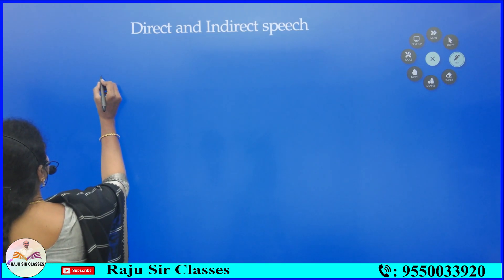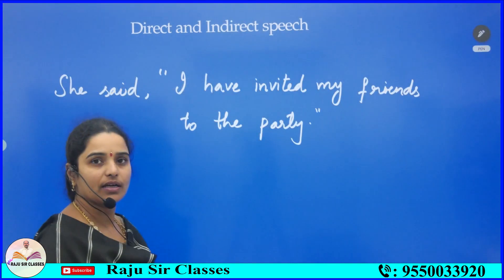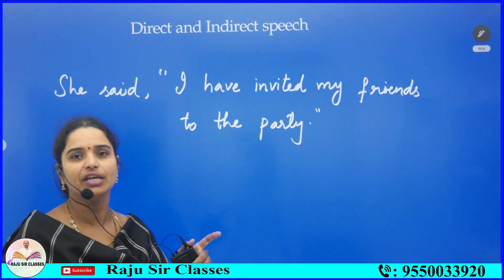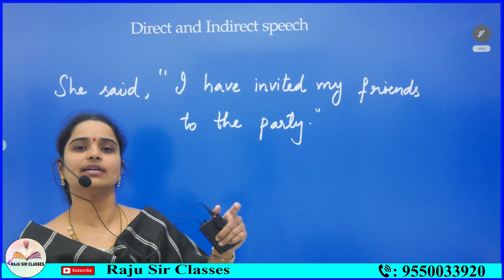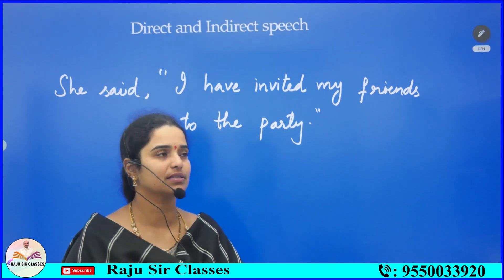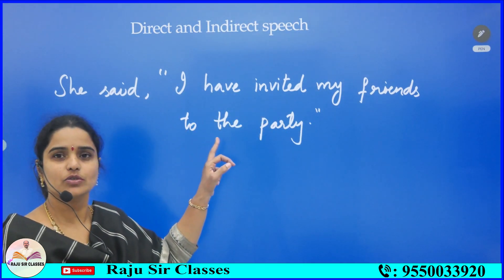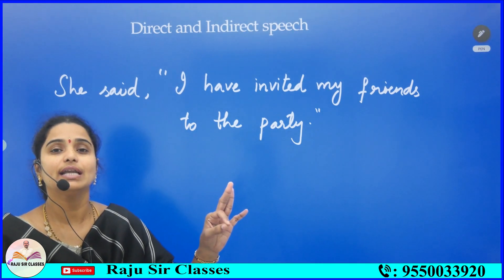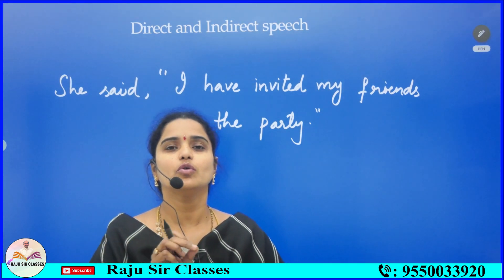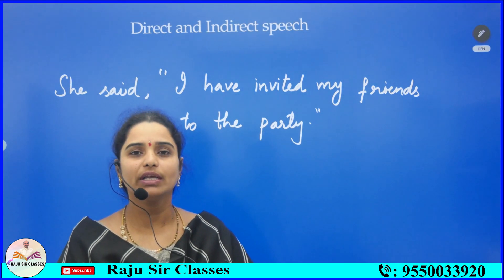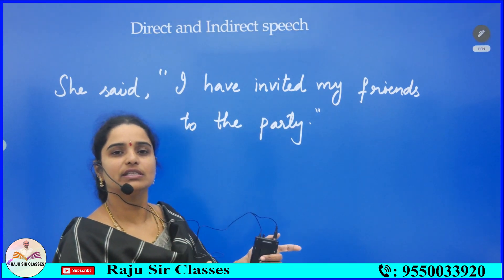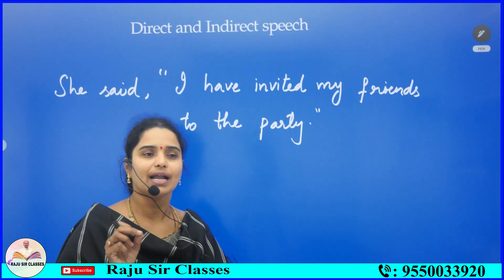Now let us look at a sentence: 'She said, I have invited my friends to the party.' First, try to identify whether this is direct or indirect speech. You can see punctuation — inverted commas — which we use in direct speech. In indirect speech, we don't use any sort of punctuation; only at the end of the sentence we put a full stop.